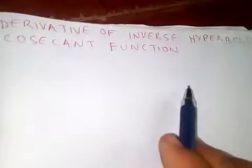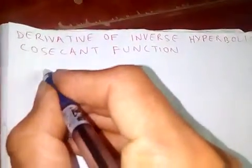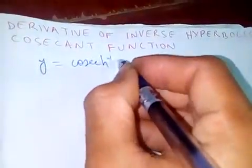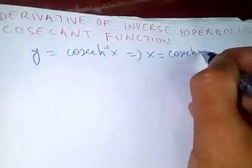Thanks for watching my video. Today I'm going to discuss the derivative of inverse hyperbolic cosecant function. Now let's say y is equal to cosecant hyperbolic inverse of x, so if you find out x is equal to cosecant hyperbolic of y.